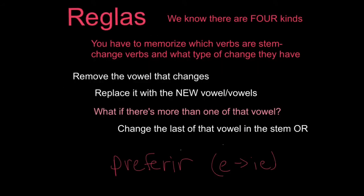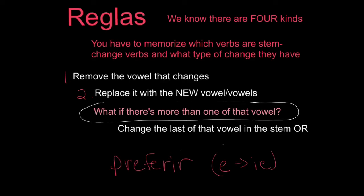Now the rules. We know there are four kinds of stem changes, and we have to memorize which verbs change and what type of change they have. The steps are: remove the vowel that changes, then replace it with the new vowel. What if there's more than one of that vowel — like in the verb preferir? We change the vowel closest to the ending, which is the last vowel in the stem. For preferir, we choose the second E because it's the last vowel, right next to the ending.